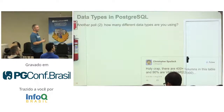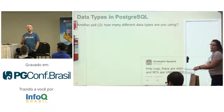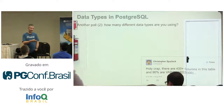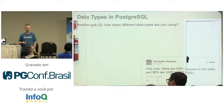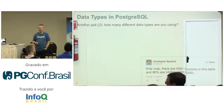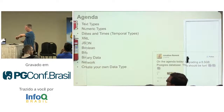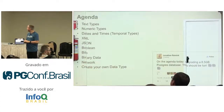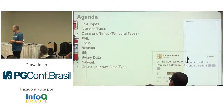Which brings me to my next question: how many data types are you using? Most people say less than 5, some say 10. We want to look into the most common types you will see in Postgres: text types, numeric, dates and times, maybe XML, JSON — kind of a hot topic these days — boolean, binary data, and network types.